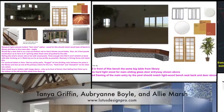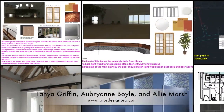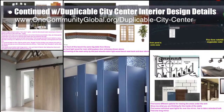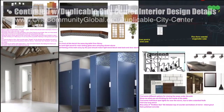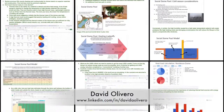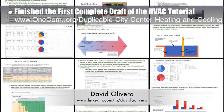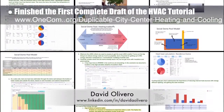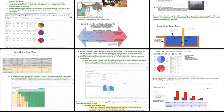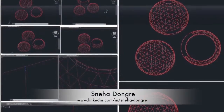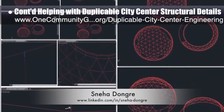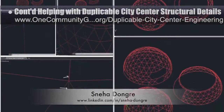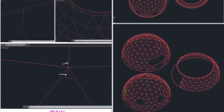Tanya Griffin, Aubrey Ann Boyle, and Ally Marsh — interior designers from Lotus Designs — completed their ninth week helping with the duplicable city center interior design details. This week's focus was the initial concept board for the social dome and main public restrooms. David Olivero, mechanical engineer and data scientist, continued helping finish the city center HVAC designs — this week he finished the first complete draft of the HVAC tutorial. Sneha Dangre, structural engineer, continued her second week helping with the duplicable city center structural details, focusing on removing non-structural lines and components in AutoCAD and adding any missing ones.